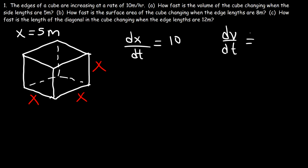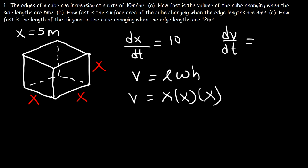How can we calculate dv/dt? First we need to write an equation that relates the volume of the cube to x. The volume of a rectangular prism is length times width times height. In this case the length, width, and height of the cube are all x, so x times x times x gives us x cubed — so the volume is x³.